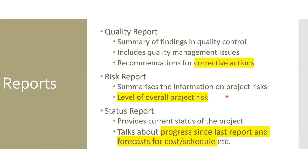The next report is a risk report, which summarizes information on project risk. It summarizes the risks available, the level of overall project risk — whether it's green, yellow, or red — and can include an overall risk score. It gives a summary of total risks identified in the project, the impact, and the overall risk score.